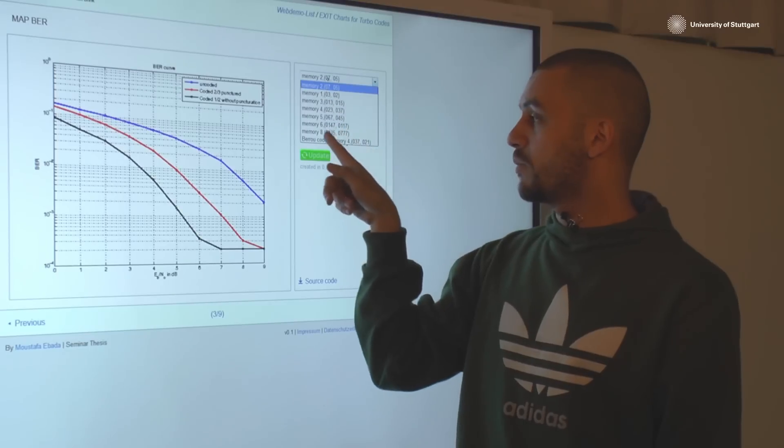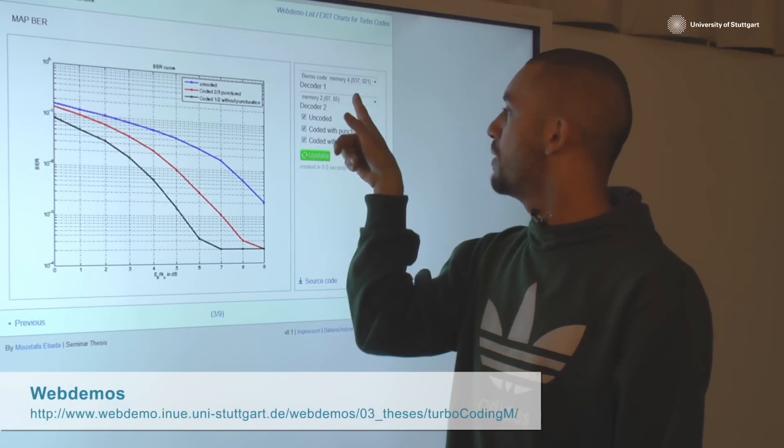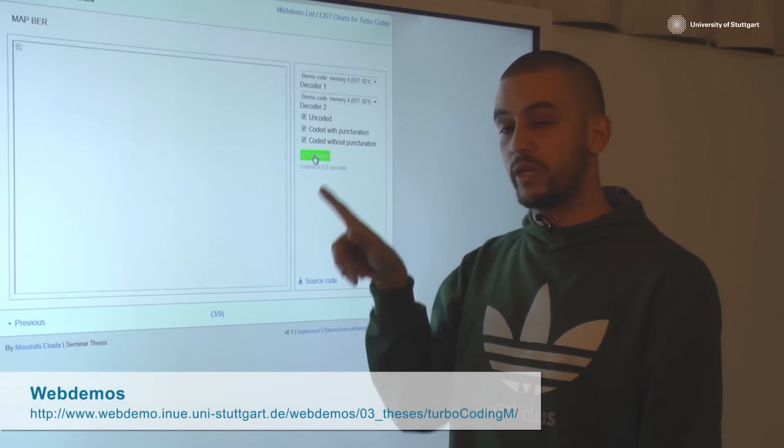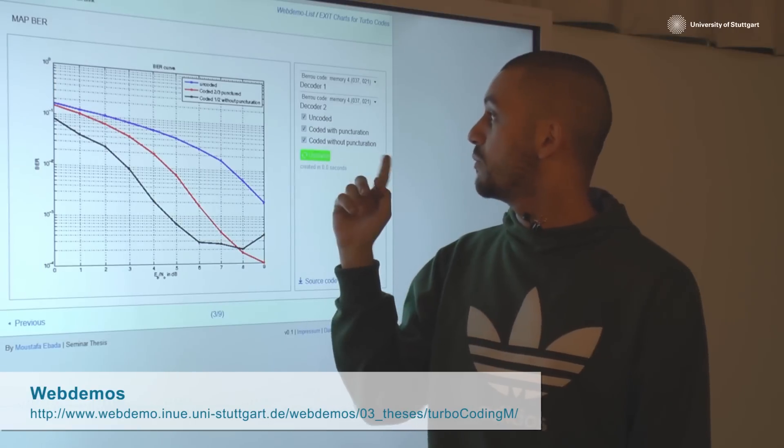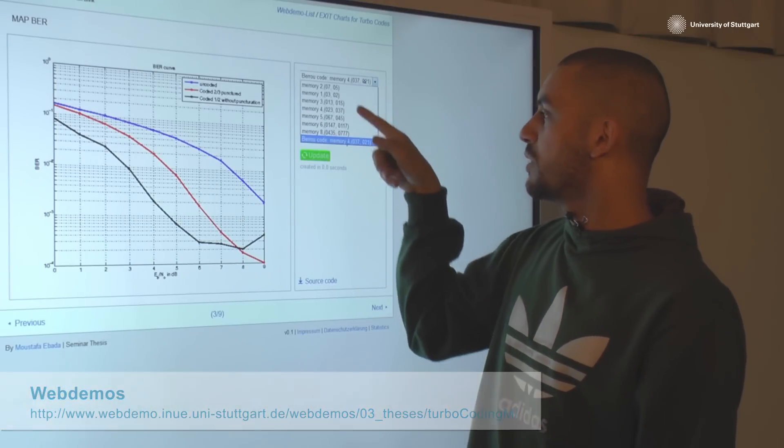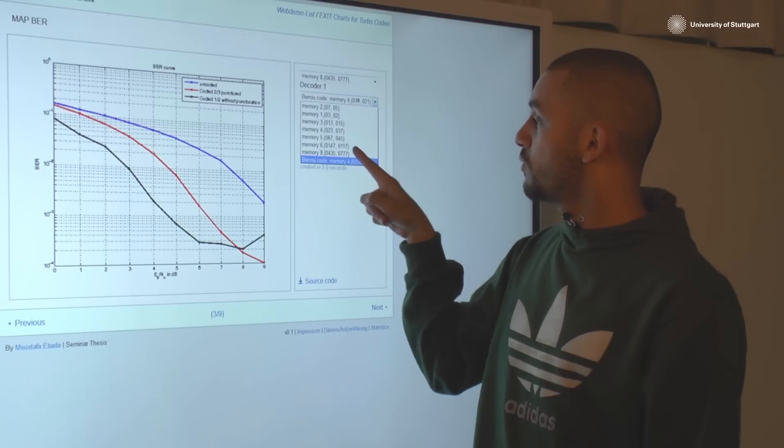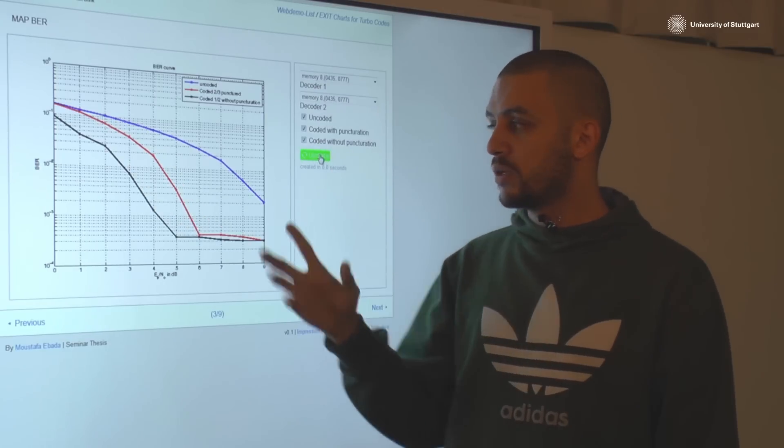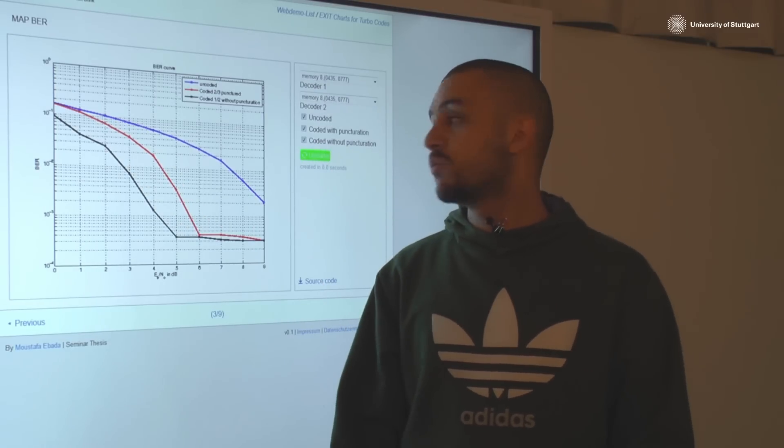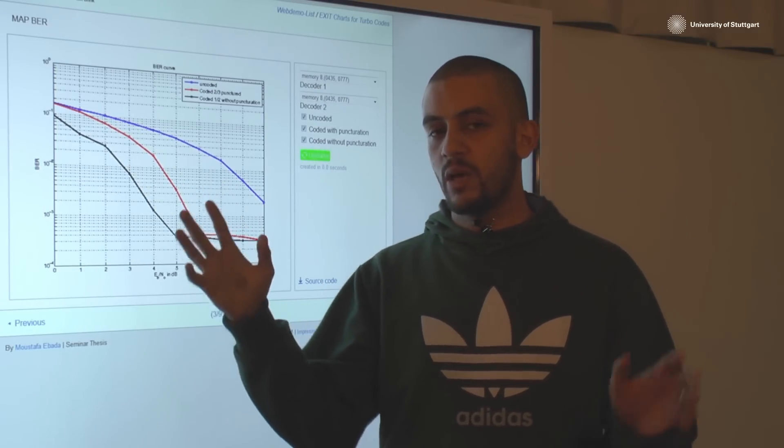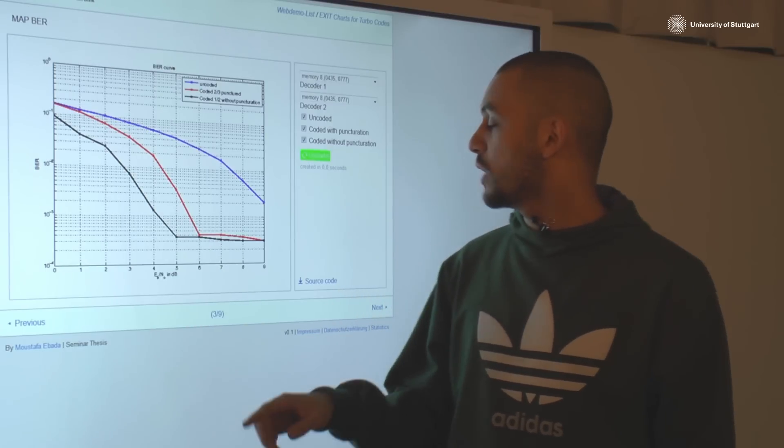Also you can see for the Bureau code, which is the very famous memory element code. You can view the three curves for the Bureau code. Also we have big memory elements like memory 8, so we can compare the memory 8 element and just update. Here you have the three curves for the memory 8 element, which say much more about the memory 8 element behavior.